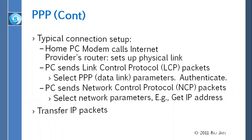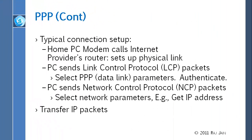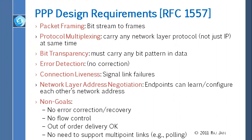The PC modem calls the internet provider, who sets up the link. Then you send LCP packets. Once done with LCP packets, you authenticate and send NCP packets. Once you get the NCP packets, you can send IP packets. So there are three kinds of packets you can send: LCP, NCP, and IP.